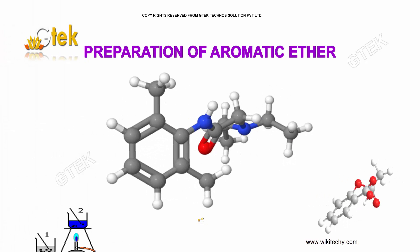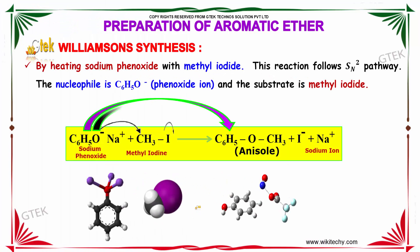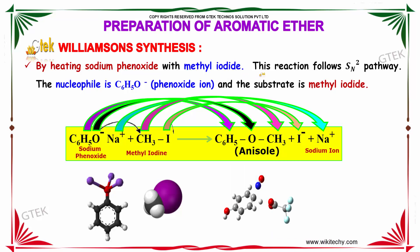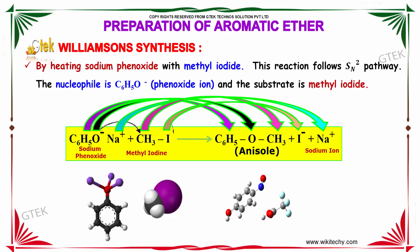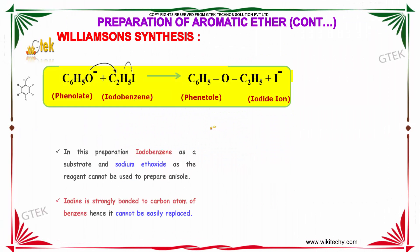We will be looking at the preparation of aromatic ethers. The first process is Williamson synthesis. In Williamson synthesis, we heat sodium phenoxide with methyl iodide. The reaction follows an SN2 mechanism. The nucleophile here is C6H5O⁻, that is the phenoxide ion, and the substrate is methyl iodide. The sodium phenoxide reacts with methyl iodide to form anisole and sodium iodide, where the methyl group replaces the sodium atom to form anisole.